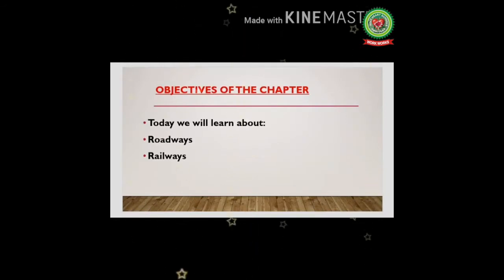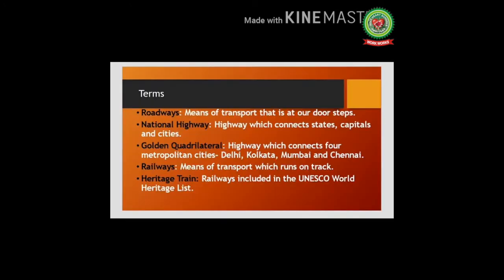Today we will learn about roadways and railways. Let us discuss a few terms first. The first term is roadways: means of transport that is at our doorsteps. Second, national highway: a highway which connects states, capitals, and cities. For example, National Highway 1 connects Amritsar, Ambala, and Delhi.